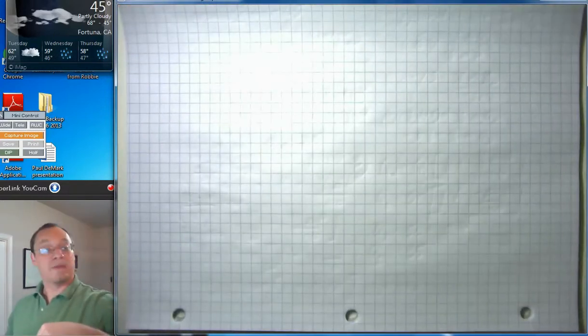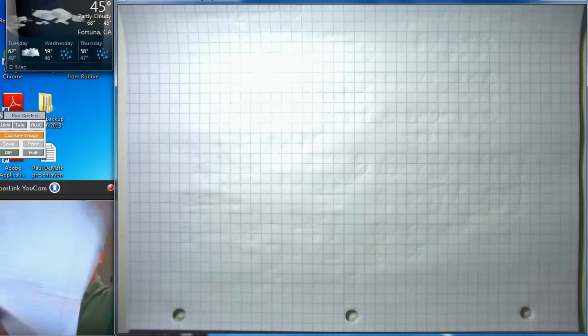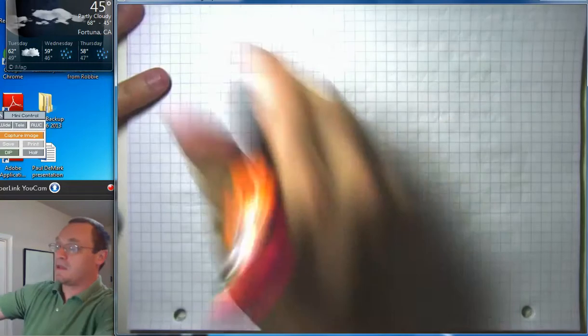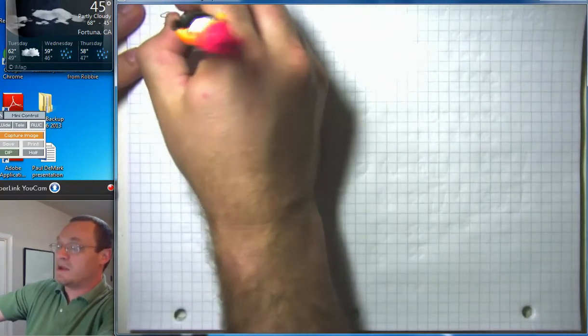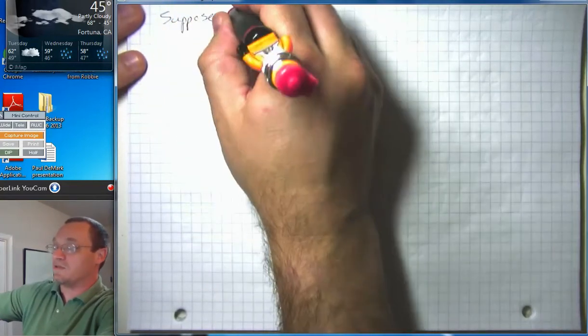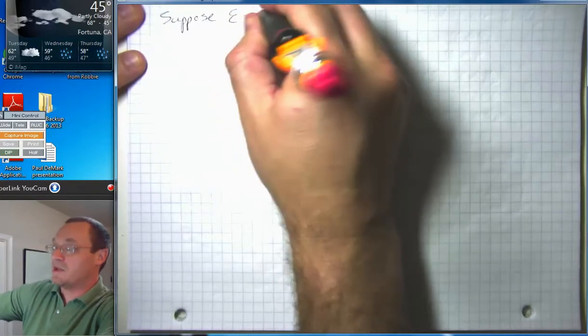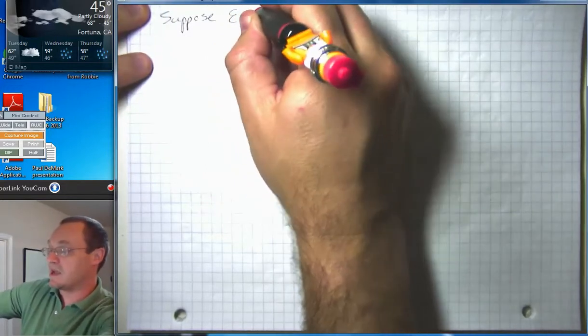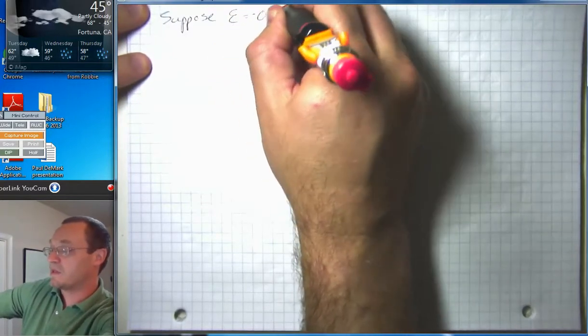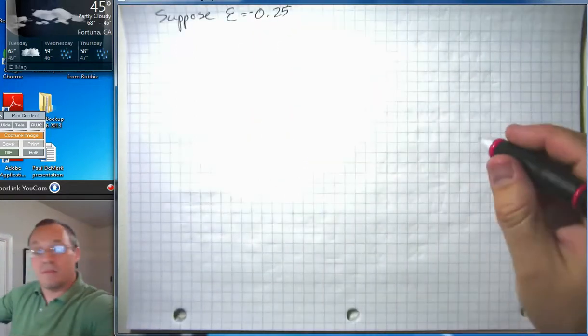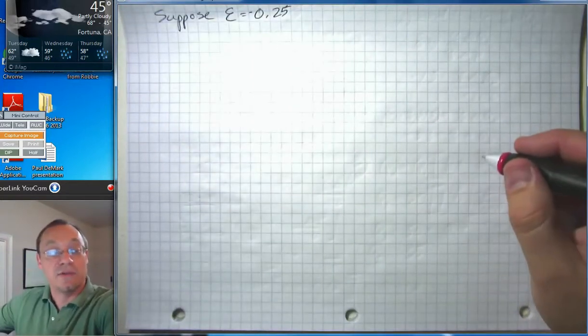So what about the reverse? A little bit trickier, but not in principle any more difficult. Suppose we know that elasticity is, say, negative 0.25, so negative one quarter.